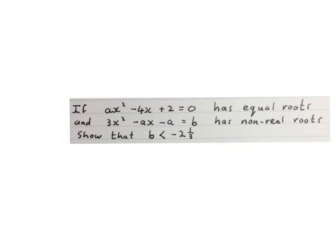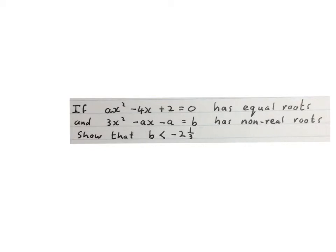So let's do the question. The question reads: if ax² minus 4x plus 2 equals 0 has equal roots, and 3x² minus ax minus a equals b has non-real roots, show that b is smaller than minus 2 and a third.